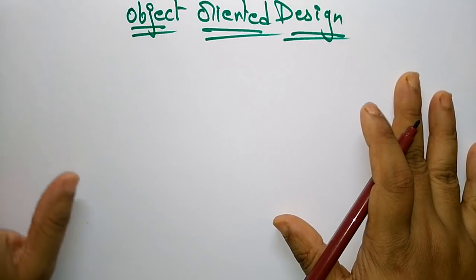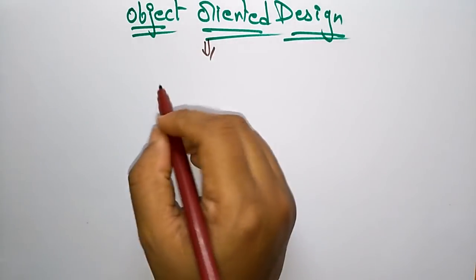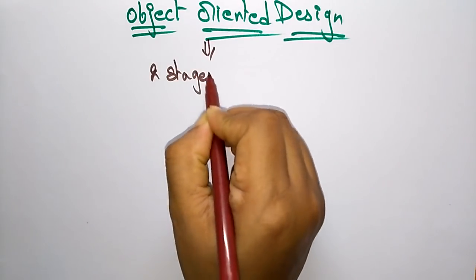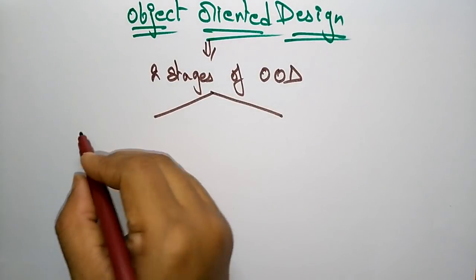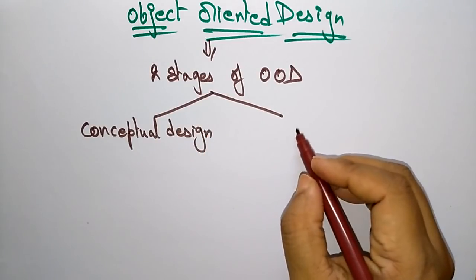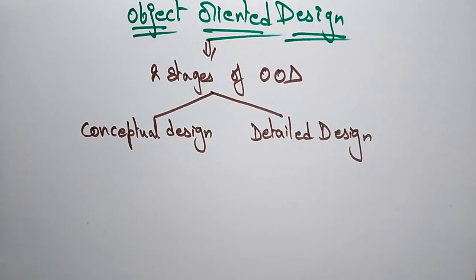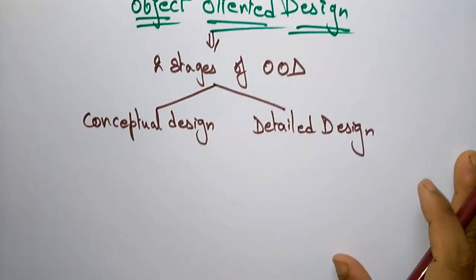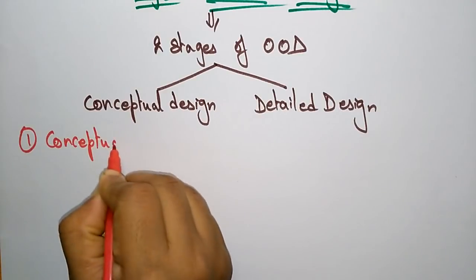There are two stages of object-oriented design. The first is conceptual design and the second is detailed design. You can design your product based on the requirements — after analyzing you have to start the design work. The design can be done in a conceptual-oriented way or in a detailed design-oriented way. Let us see what conceptual design is.